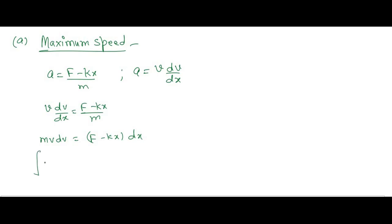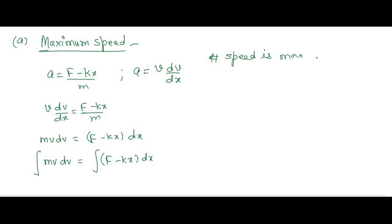Integrating both sides: ∫m·v·dv = ∫(F − kx)·dx. Now we consider the limits. The speed is maximum when the acceleration is zero, so we need to find the x-coordinate where acceleration equals zero.